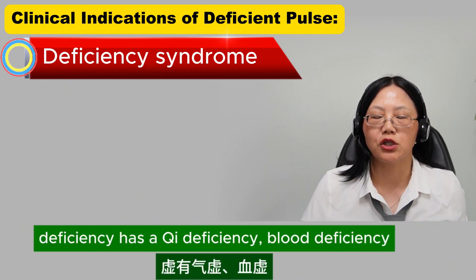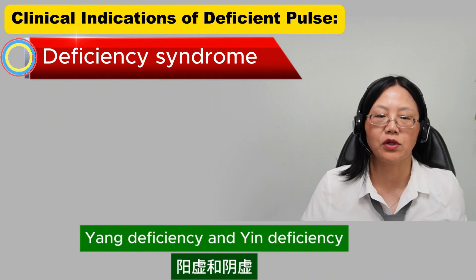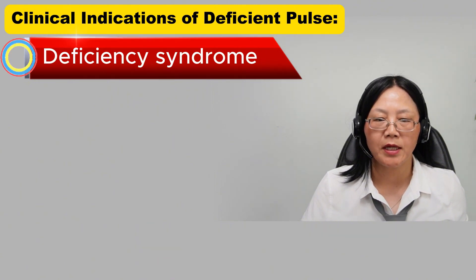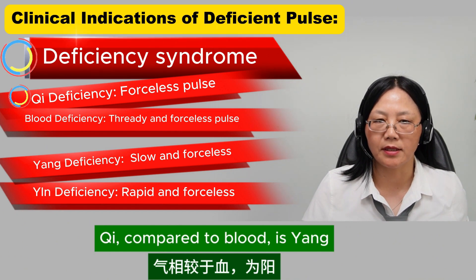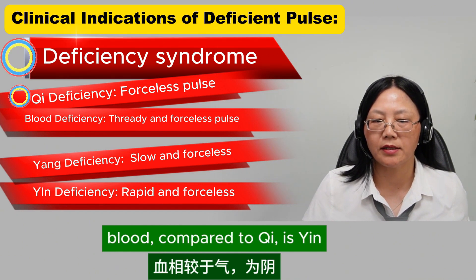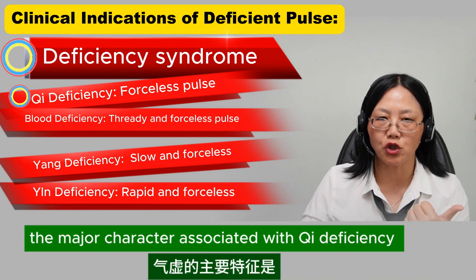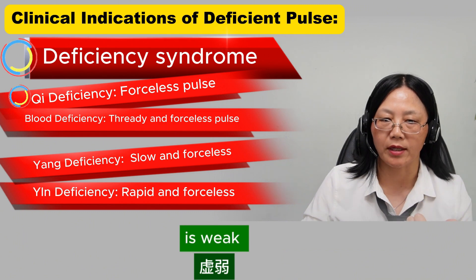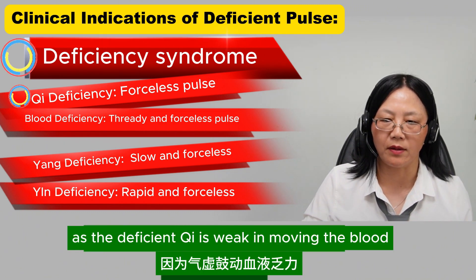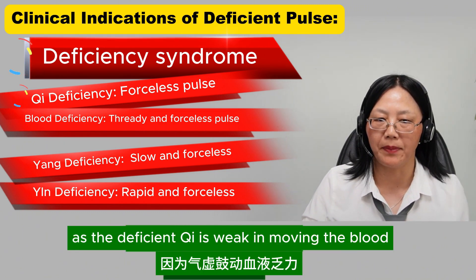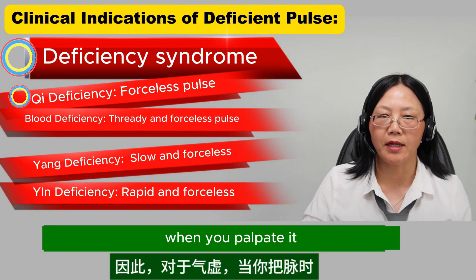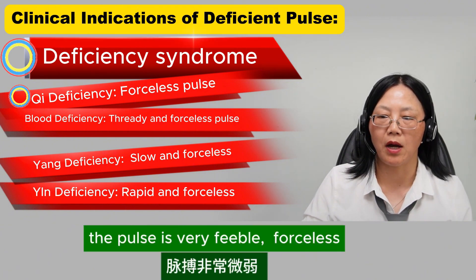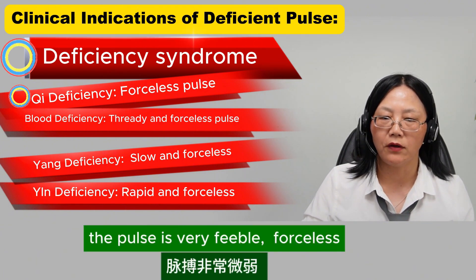Deficiency has qi deficiency, blood deficiency, yang deficiency, and yin deficiency. Qi compared to blood is yang; blood compared to qi is yin. The major character associated with qi deficiency is weakness. As the deficient qi is weak in moving the blood, when you feel the pulse, it is very feeble and forceless.